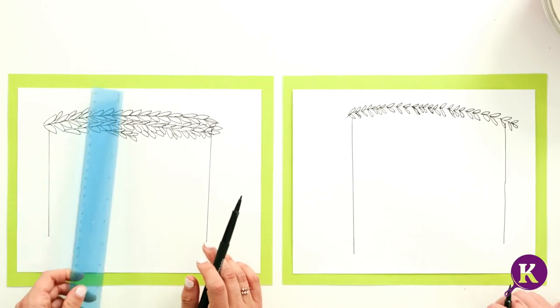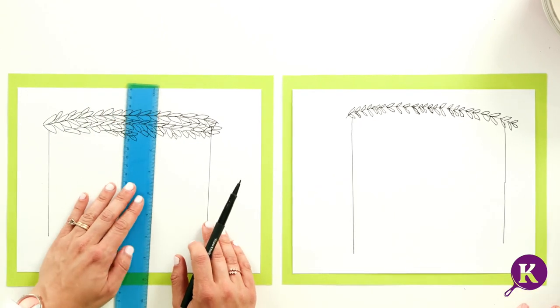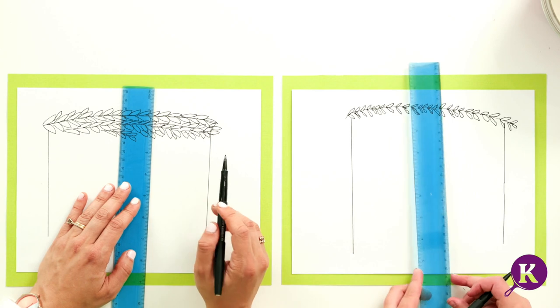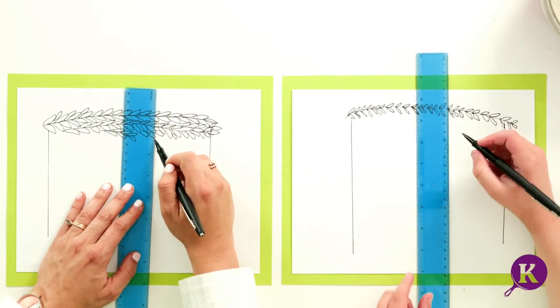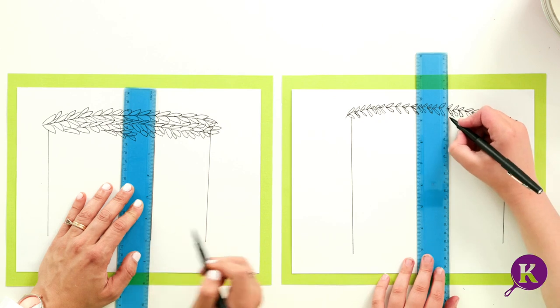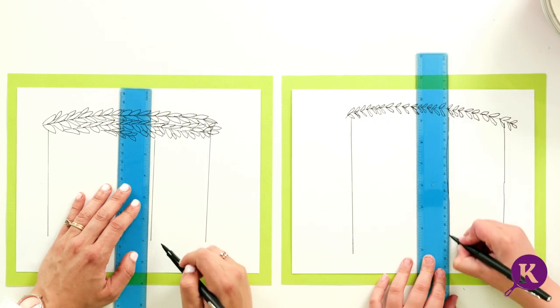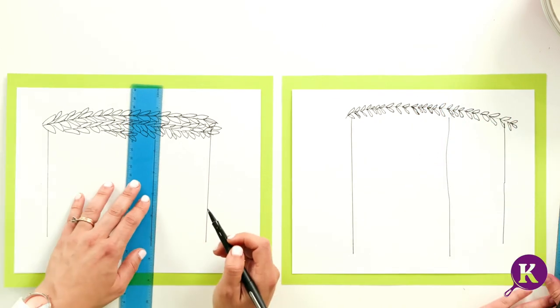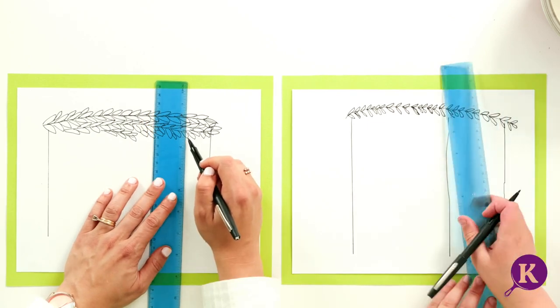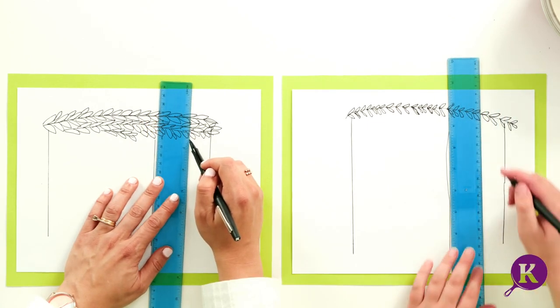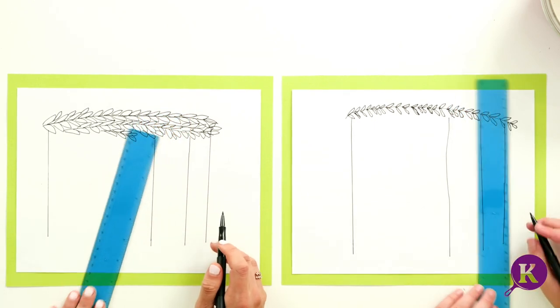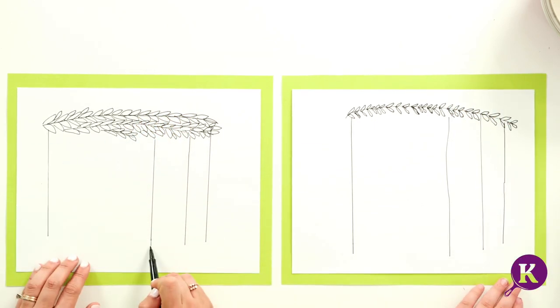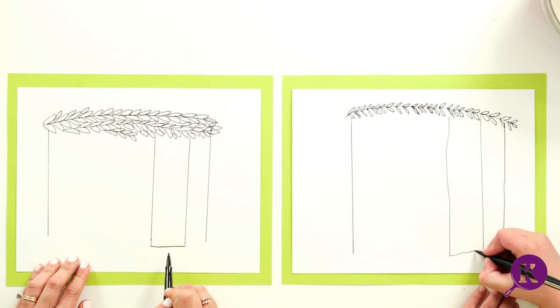Now we're going to make more of the walls of the Sukkah. So I'm going to take my ruler again, and I'm going to make another line just about here. And another one right in the middle. Or a little on the side, that's okay too. I'm going to close off these two lines.